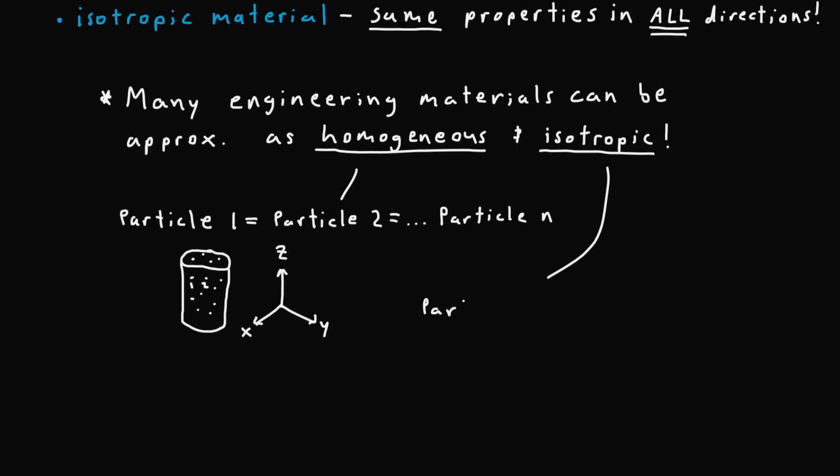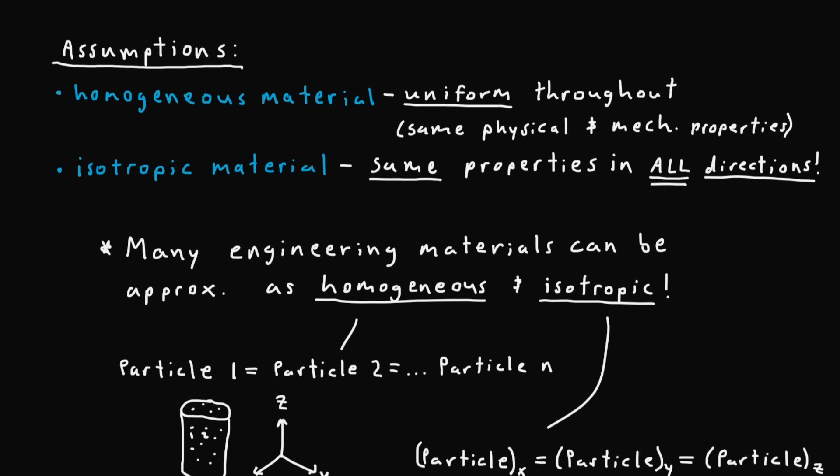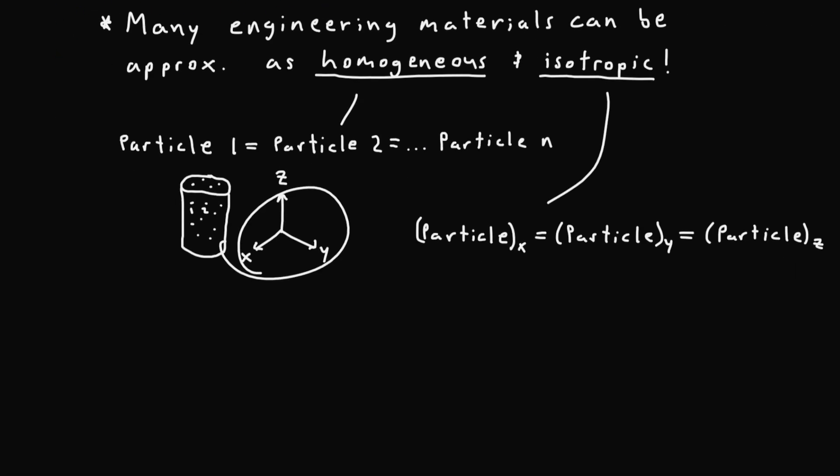In this case we will expect a particle along the x-axis to be equal to a particle on the y and of course equal to a particle on the z. And again this is simply because the material has the same properties in all directions x, y, and z.